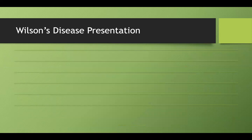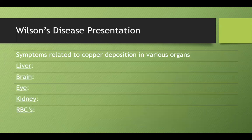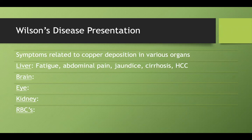Similar to hemochromatosis, the symptoms of Wilson's disease depend on where copper deposits. In the liver, you can have fatigue, abdominal pain, and jaundice. If the damage is prolonged enough, you will get cirrhosis and hepatocellular carcinoma.